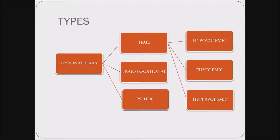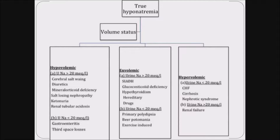True hyponatremia is where there is actual reduction in sodium levels — it can be hypovolemic, euvolemic or hypervolemic, each with different causes. One important point: if the patient is on any diuretics, if there is any mineralocorticoid deficiency, associated hypothyroidism, or cardiovascular causes like congestive heart failure — keeping all these things in mind becomes important so that you have a differential diagnosis when you are dealing with an imbalanced patient.